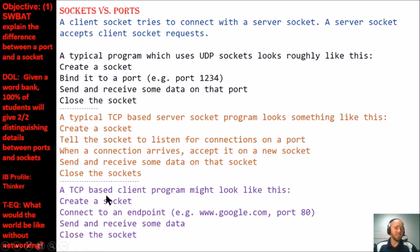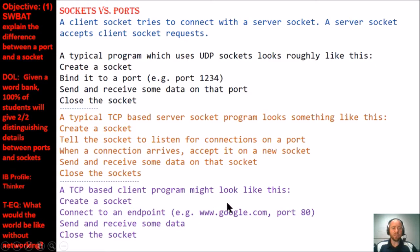A client socket tries to connect with a server socket; a server socket accepts client socket requests. A typical TCP-based server socket program will first create the socket, tell it to listen for connections on a port, accept the connection on a new socket when it arrives, then send and receive data before closing. A TCP-based client program similarly creates a socket, connects to an endpoint such as google.com on port 80, sends and receives data, then closes when done.